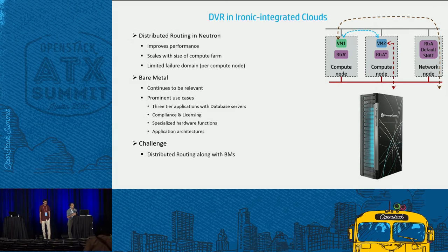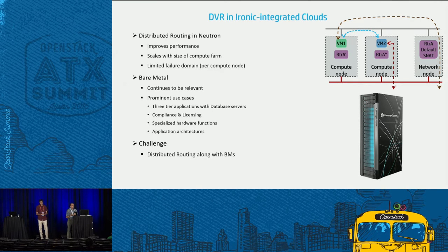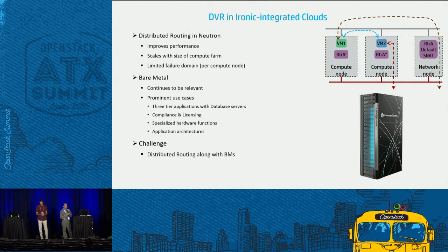A few summits ago, Distributed Virtual Router, DVR, was contributed into Neutron. DVR brings great efficiency and scale into a virtualized workload. DVR disaggregates the routing function such that most of the routing is done within the compute nodes where the source VM resides, eliminating extra hops. It also scales as the compute nodes scale and gives fault containment — if something happens, it doesn't take the whole network down, only impacting a compute node basis or smaller. But when it comes to a workload that includes VMs as well as bare metals, there is a gap that needs to be bridged.